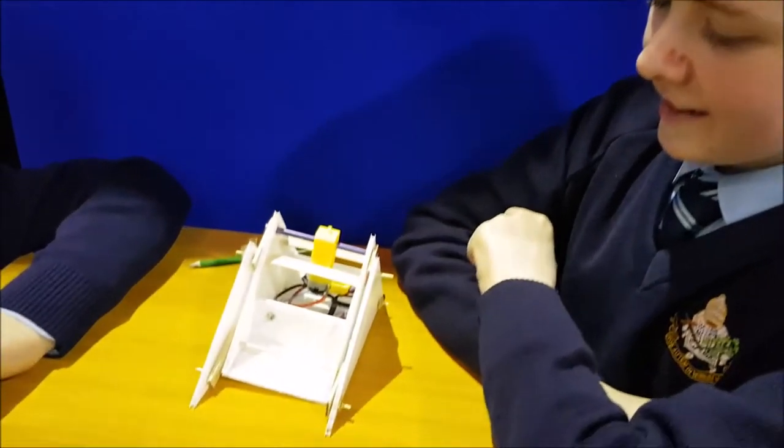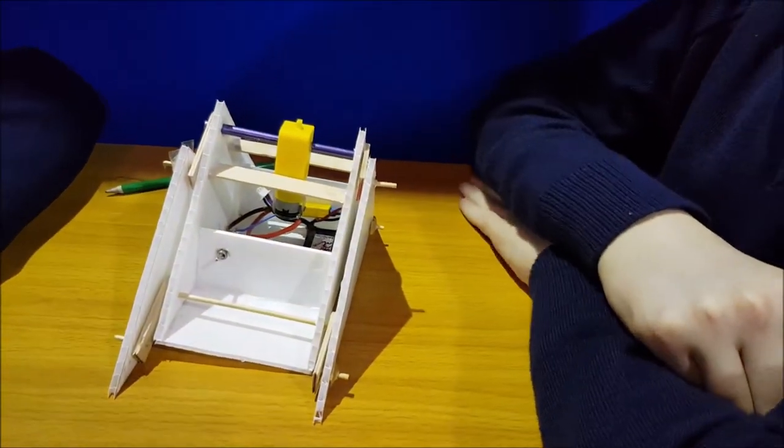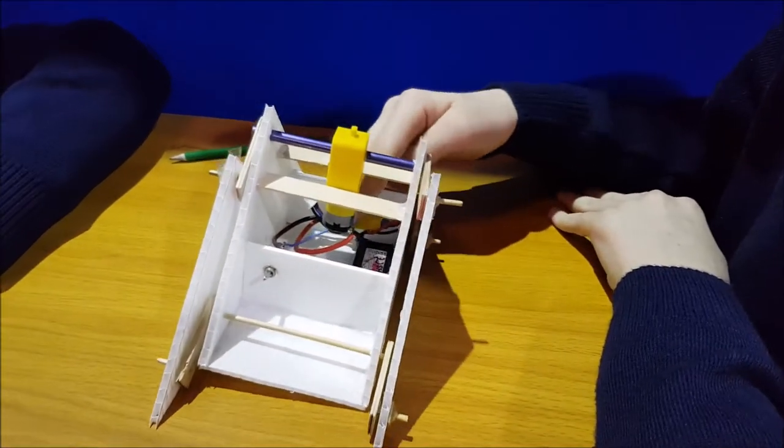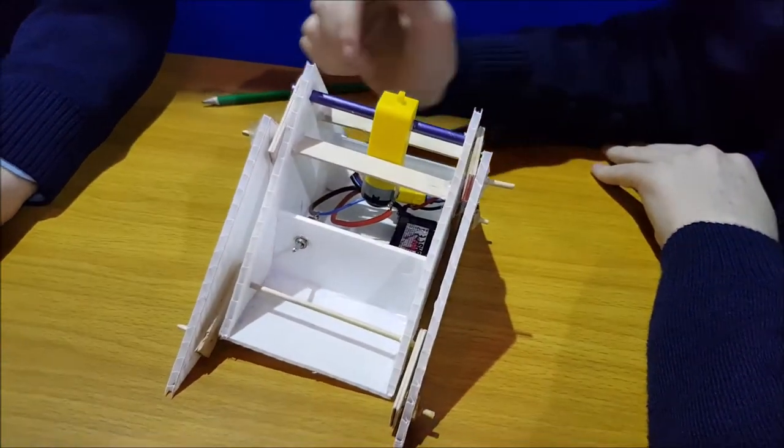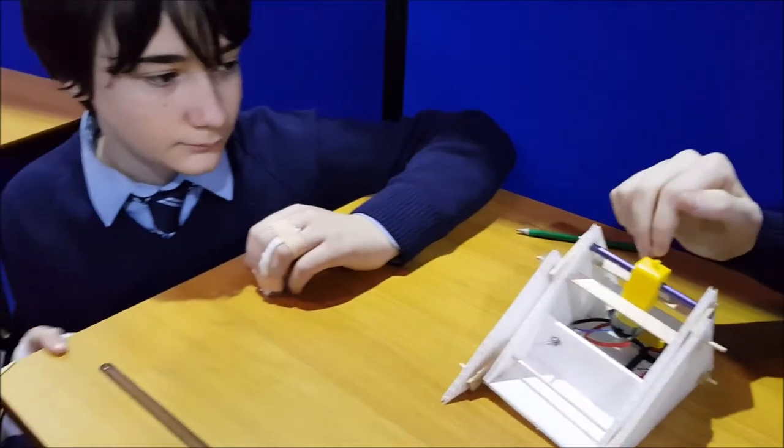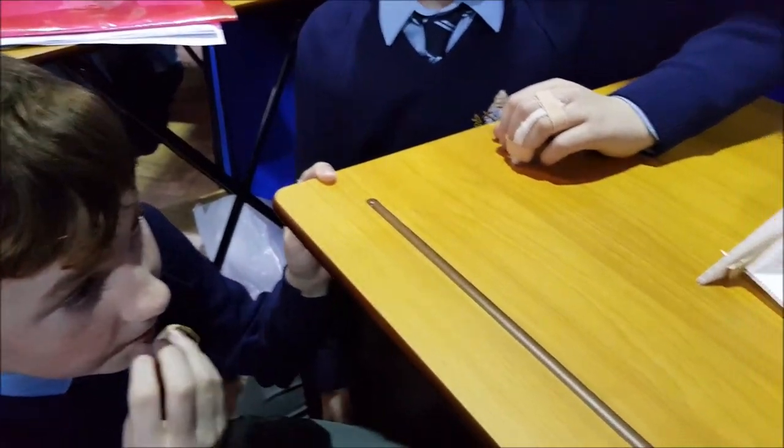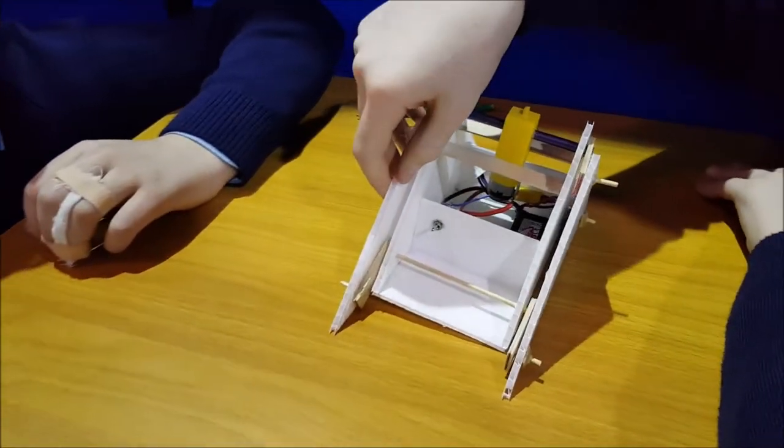This is our robot and it can walk. There's a battery in here and that will power the switch, and whenever we turn this on it will power this and this will rotate and that makes it spin so it can walk.